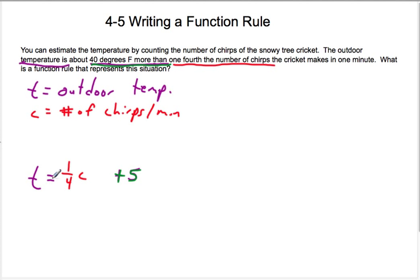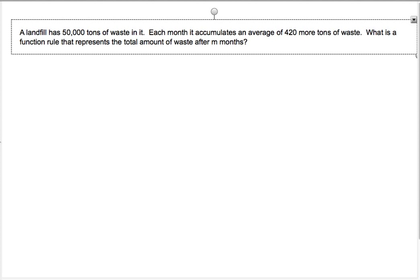What is the function rule that represents the situation? So I think we have it here. The outdoor temperature is 40, oops, I put 5, I don't know why I wrote 5. See, that's why we reread, right? So as we reread, 40 degrees more than, 40, more than one fourth the number of chirps. One fourth the number of chirps. What is the function rule that represents this situation? There it is, right here.